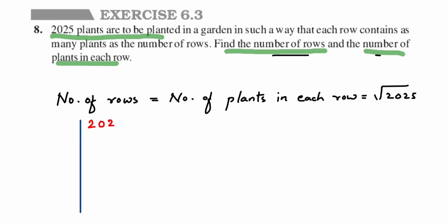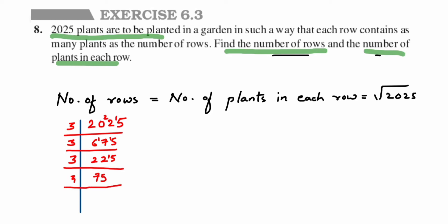2025 is divisible by 3. Dividing step by step: 2025 ÷ 3 = 675, 675 ÷ 3 = 225, 225 ÷ 3 = 75, 75 ÷ 3 = 25. Now 25 is not divisible by 3, so we move to 5: 25 ÷ 5 = 5, and 5 ÷ 5 = 1. So the prime factorization is complete.